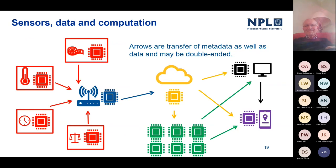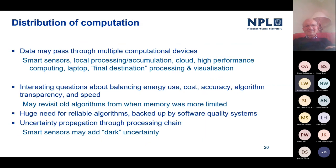Returning to the data network structure: when data passes through multiple computational devices, this leads to interesting questions about what we actually need from any given computation. We're able to balance energy usage, cost, and accuracy. It also means revisiting old algorithms, because some devices in the network may have very limited memory — meaning we might go back to algorithms for matrix inversion that are perhaps less stable under some circumstances but better for limited-memory applications. We still have a massive need for reliable algorithms to cover all those different modalities, and software quality systems to definitively demonstrate that what we're doing is correct and what the user expects.